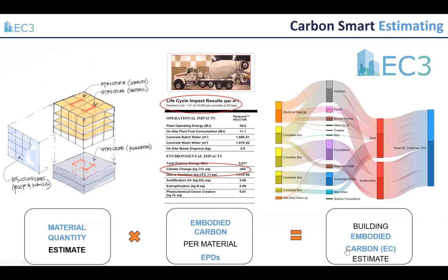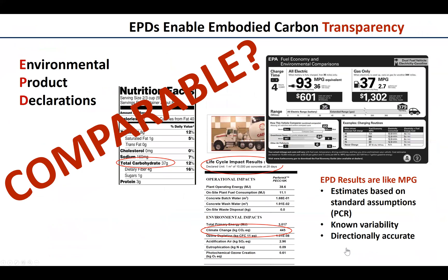At its backbone, the EC3 tool is a database of environmental product declarations. Environmental product declarations are publicly reported third-party verified EPDs, and in order to use them to evaluate materials at both a material and a building scale, a key question comes up: whether or not EPDs are comparable.